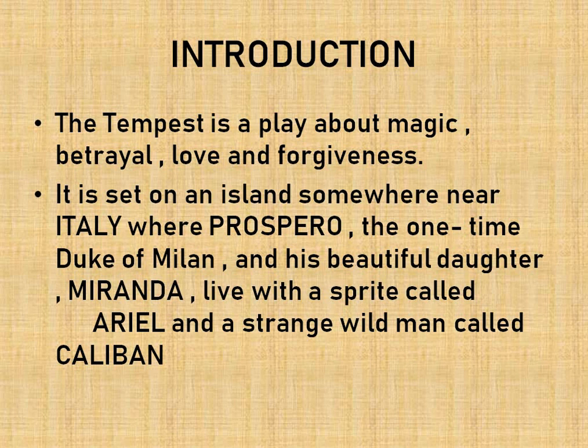The Tempest is a play about magic, betrayal, love, and forgiveness. It is set on an island somewhere near Italy, where Prospero, the one-time Duke of Milan, and his beautiful daughter Miranda live with a spirit called Ariel. And there is also a strange, wild, half-human being called Caliban.